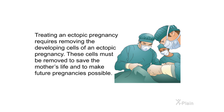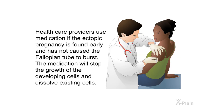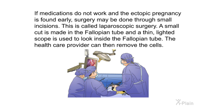Treating an ectopic pregnancy requires removing the developing cells. These cells must be removed to save the mother's life and to make future pregnancies possible. If the ectopic pregnancy is found early and has not caused the fallopian tube to burst, medication may be used to stop the growth of the developing cells and dissolve existing cells. If medications do not work, laparoscopic surgery may be done through small incisions — a small cut is made in the fallopian tube and a thin lighted scope is used to look inside and remove the cells.